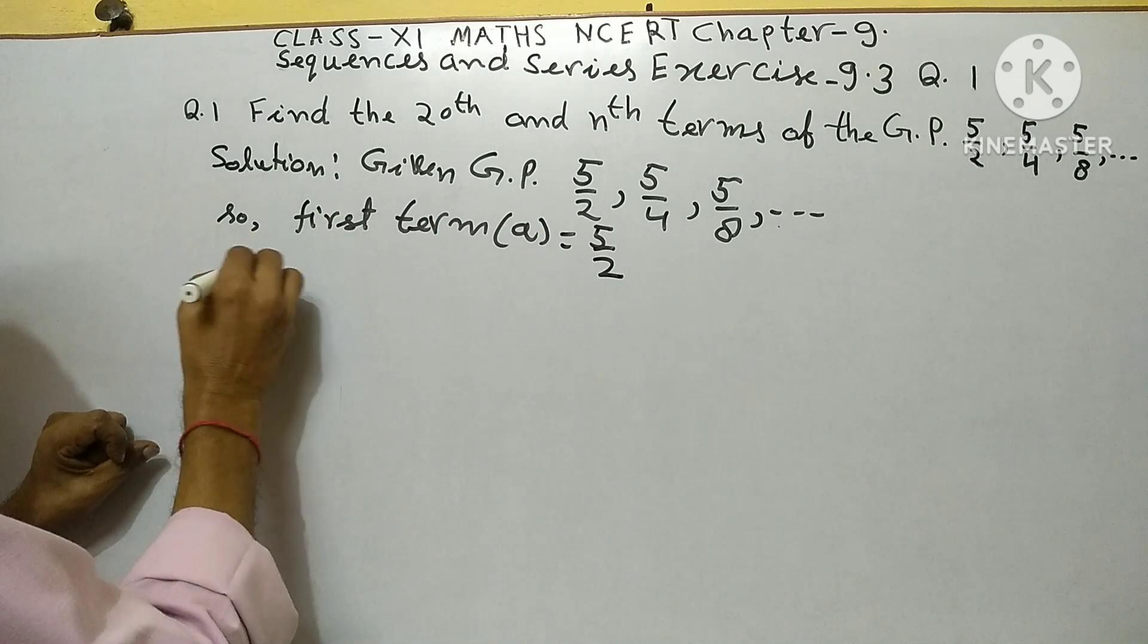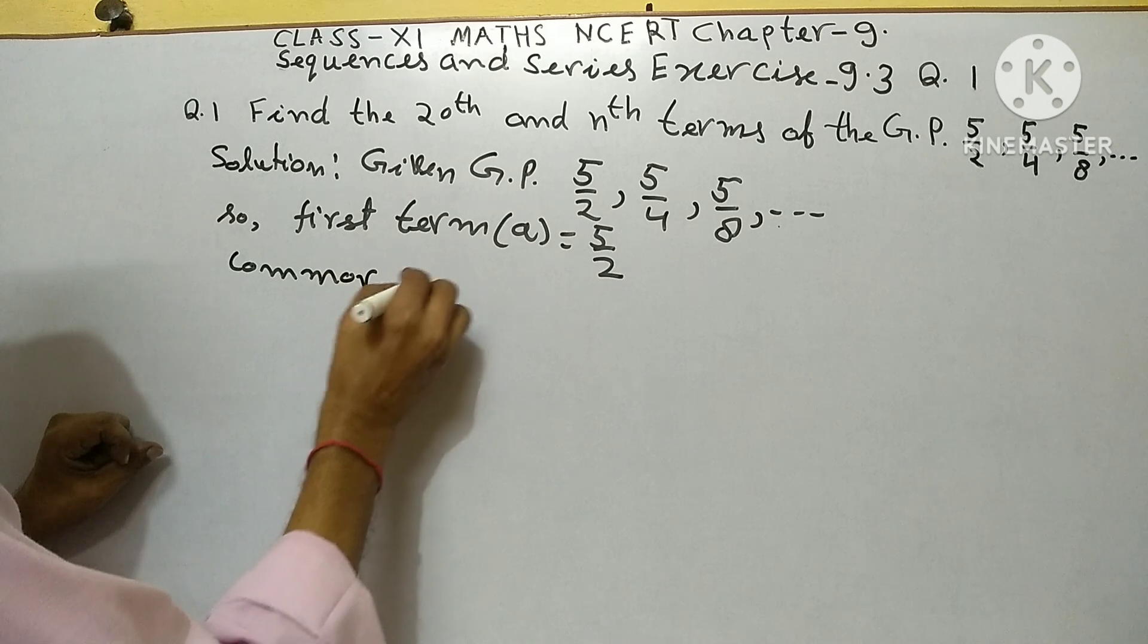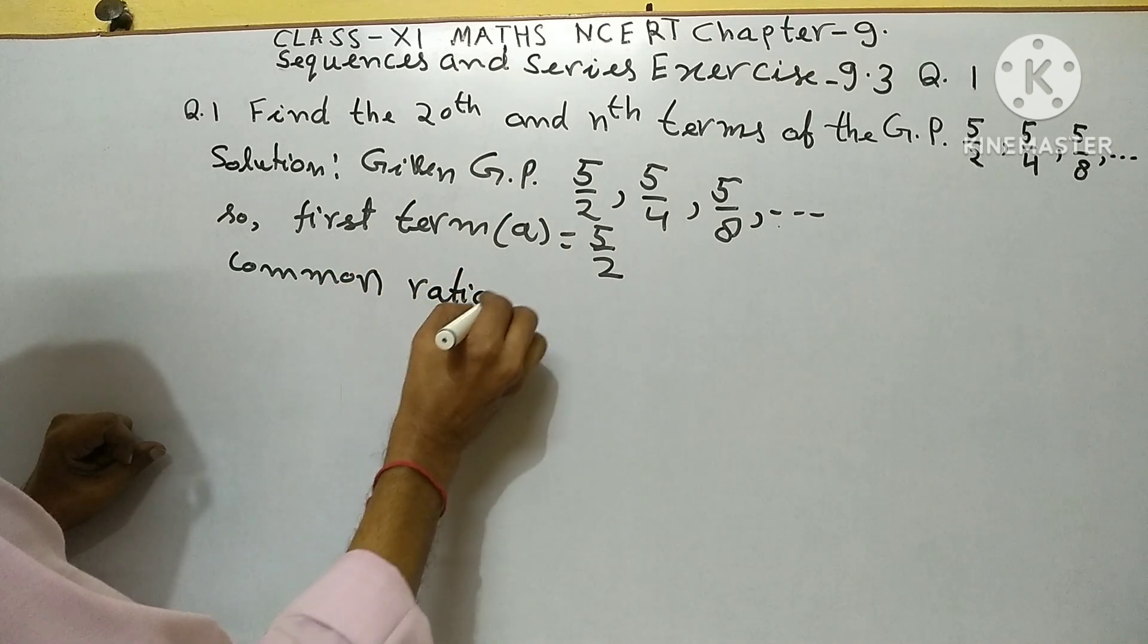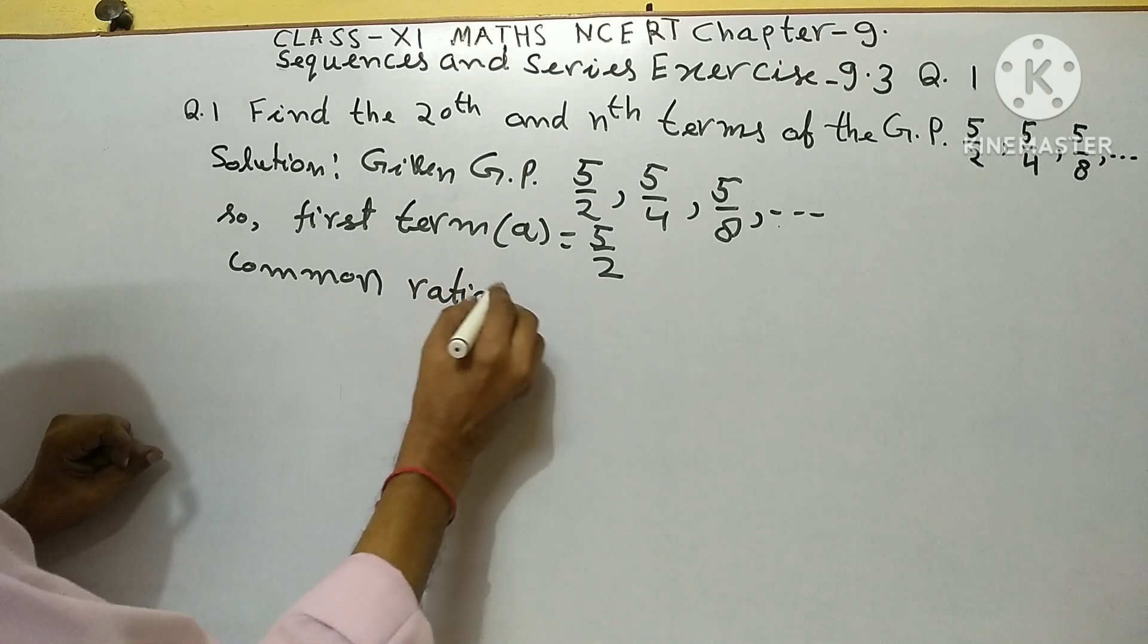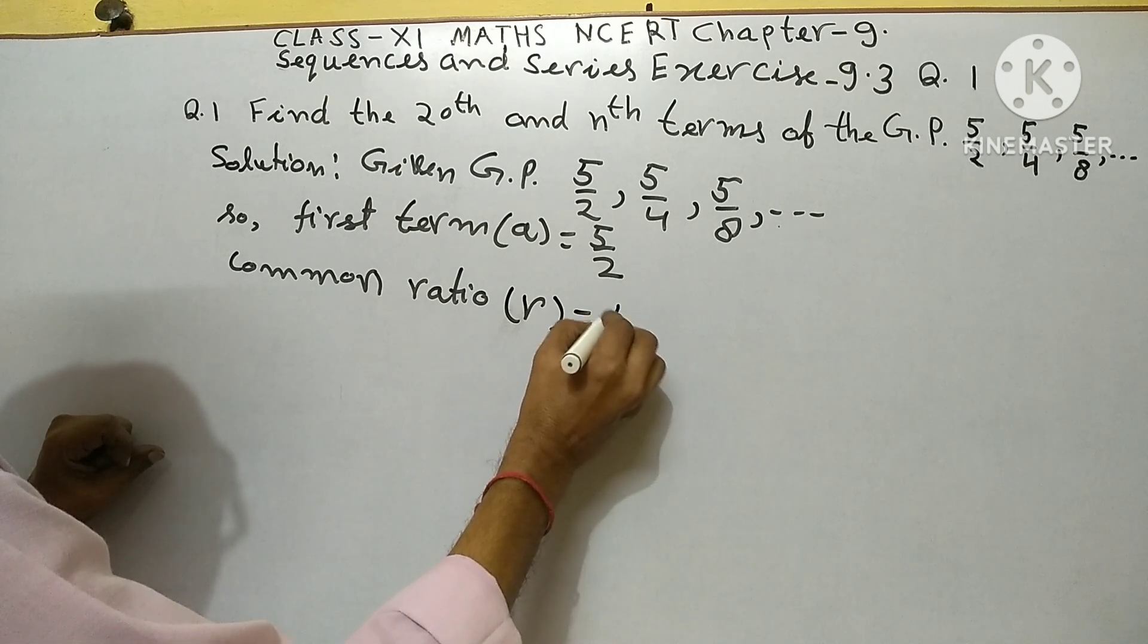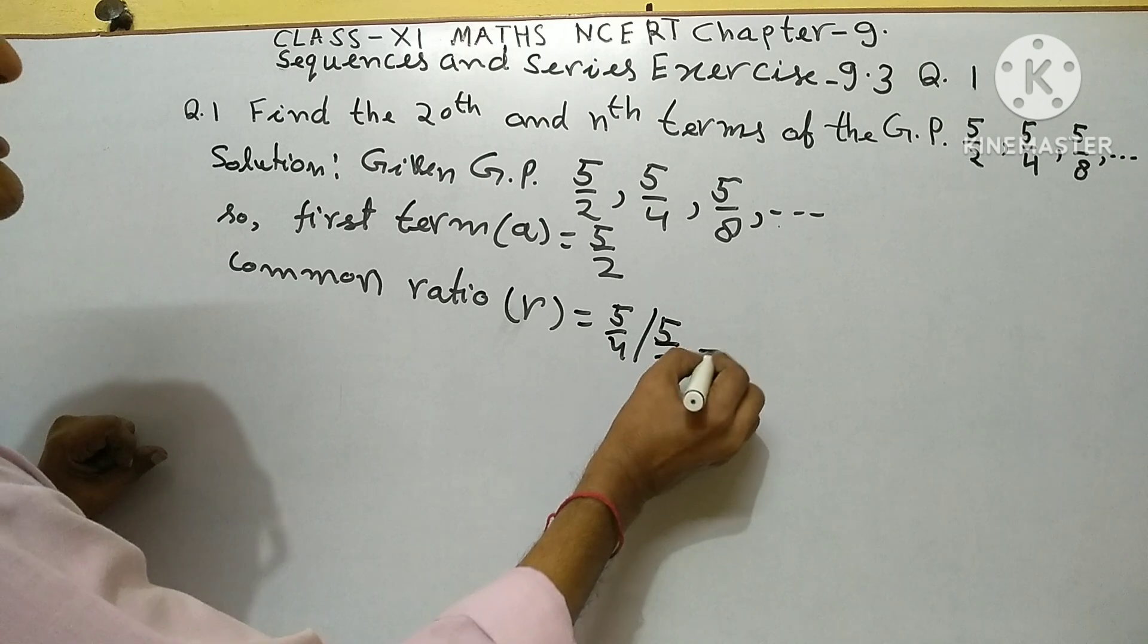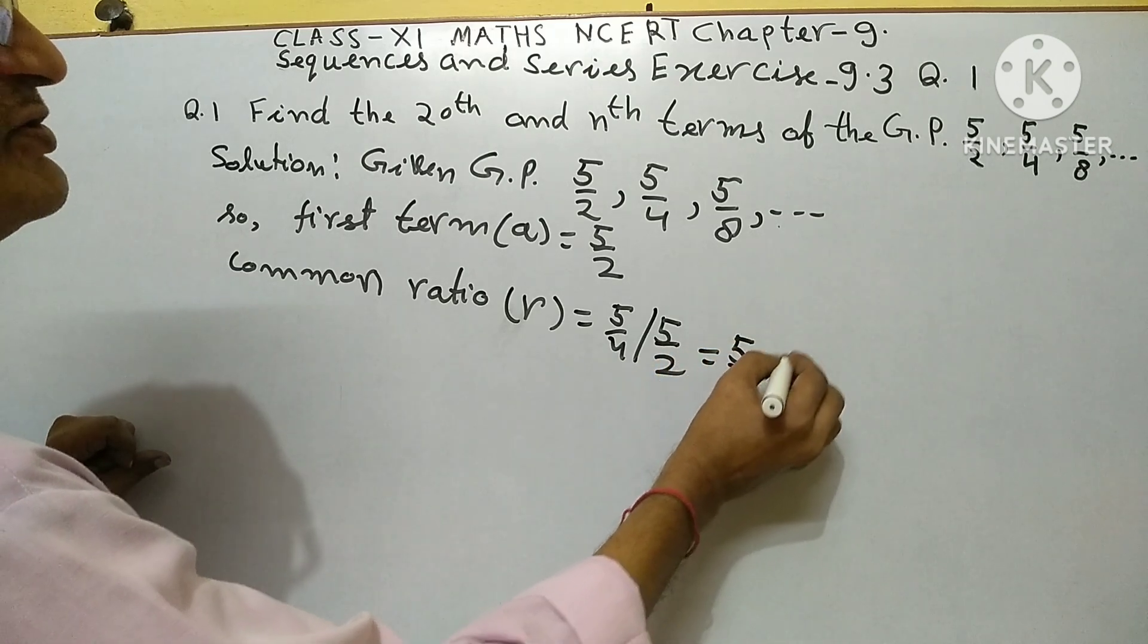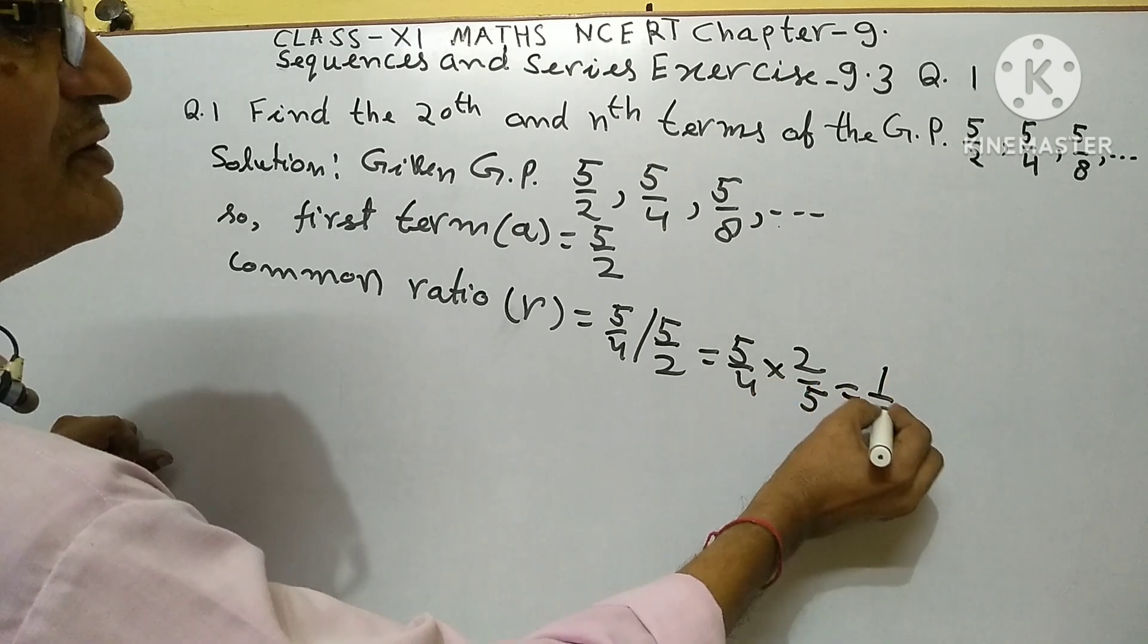Common ratio r equals 5 upon 4 upon 5 upon 2, equals 5 upon 4 into 2 upon 5, equals 1 upon 2.